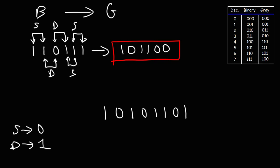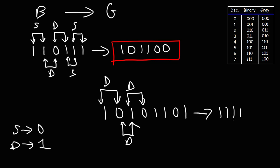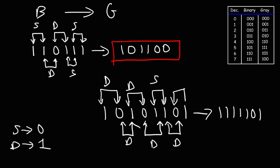Now let's move on to the next example: 10101101. Rewrite the first bit: 1. Then 1 and 0 are different, so 1. 0 and 1 are different, so 1. 1 and 0 are different, so 1. 0 and 1 are different, so 1. 1 and 1 are the same, so 0. 1 and 0 are different, so 1. And 0 and 1 are different, so 1. The answer is 11111011.